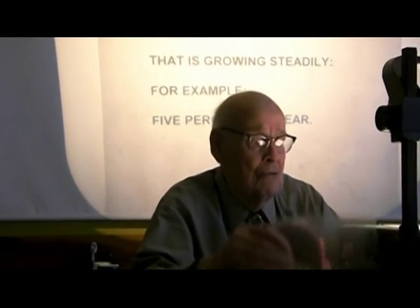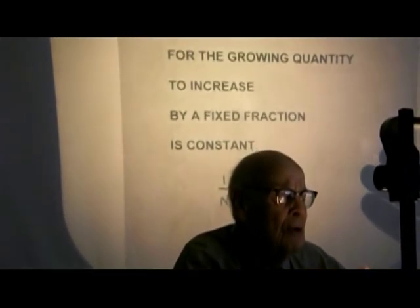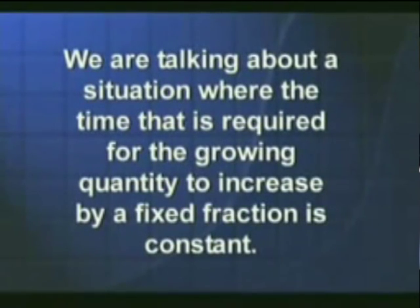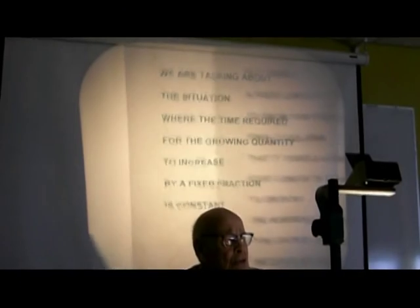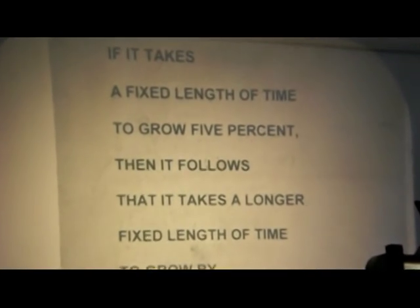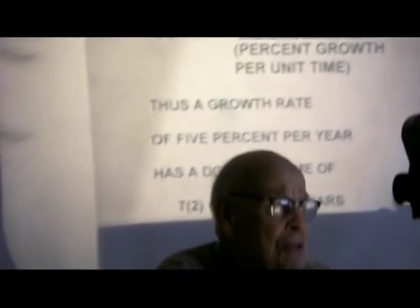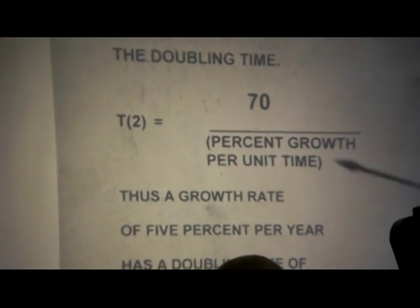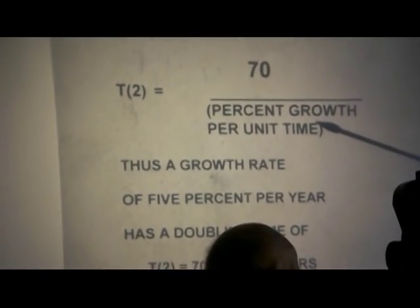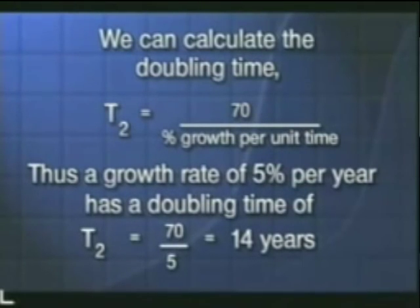It's just ordinary, steady growth. We're talking about a situation where the time required for the growing quantity to increase by a fixed fraction is a constant. So if it takes a fixed length of time to grow 5%, it follows it takes a longer fixed length of time to grow 100%. That longer time is called the doubling time. You calculate it easily: take the number 70, divide by the percent growth per unit time. For 5% per year, divide 5 into 70, and the growing quantity will double in size every 14 years.